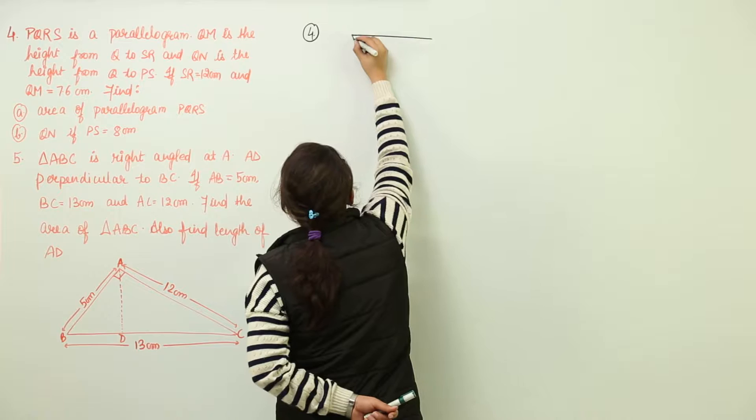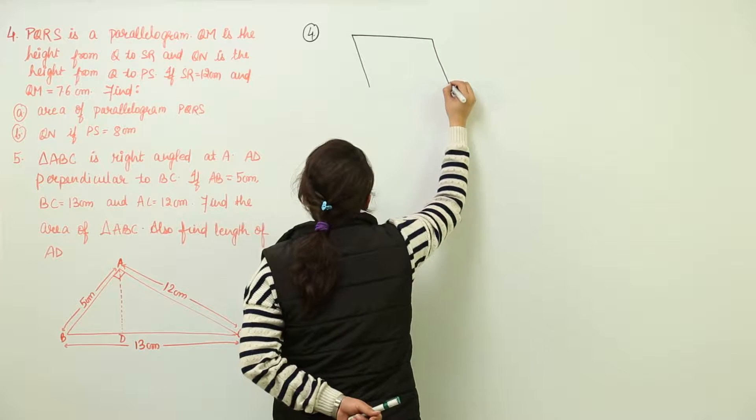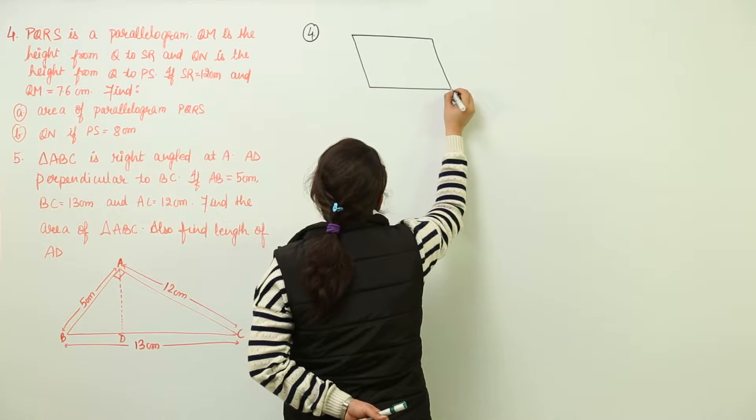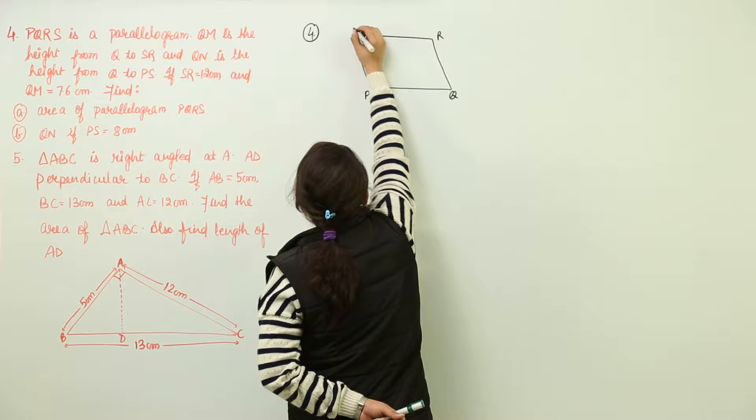That will be like this. PQRS and I have made the parallelogram. Let's name it P, Q, R, and S.